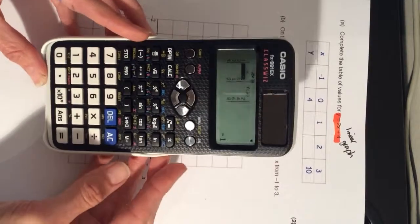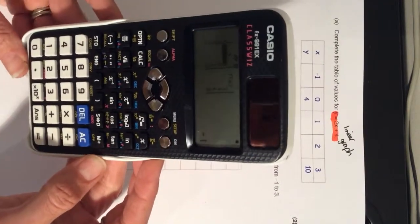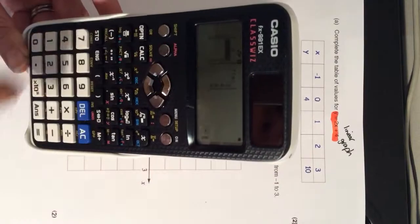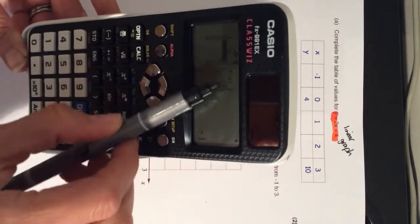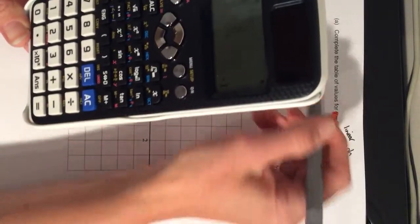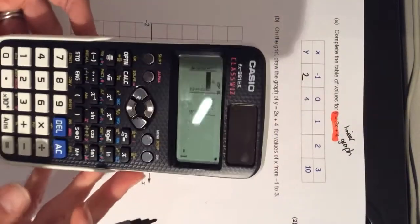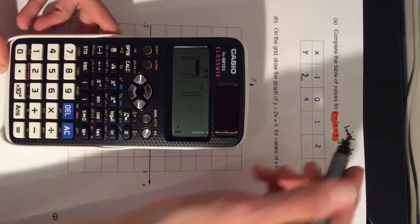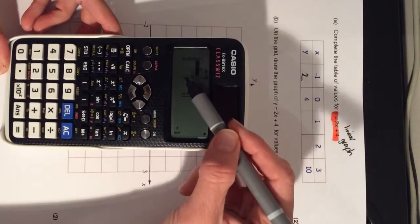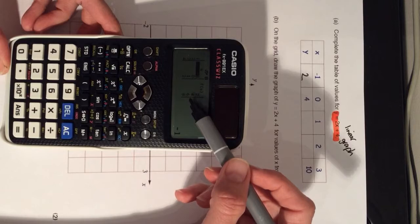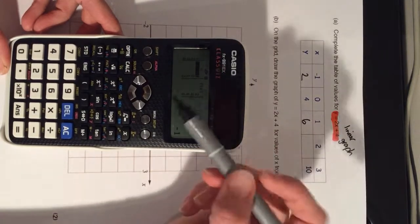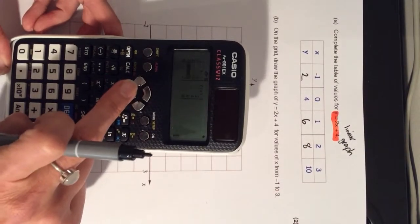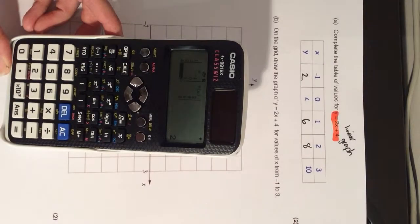And what that does, it gives me a table of values. So, we have the x values that I originally put in and the corresponding y values. And all I need to do is enter them together. So, when x is minus 1, y or f of x is 2. I'm going to go ahead and put that in there. And I'm going to continue and fill in the rest of the values. When x is 0, y is 4, which we already had. When x is 1, y or f of x is 6. And then when x is 2, the value is 8. And if you need to go down further, then you can get the last one as well.